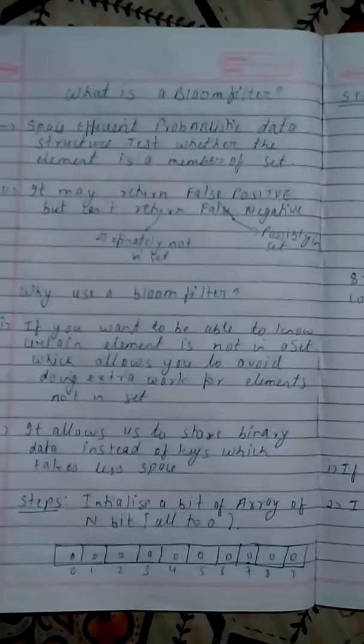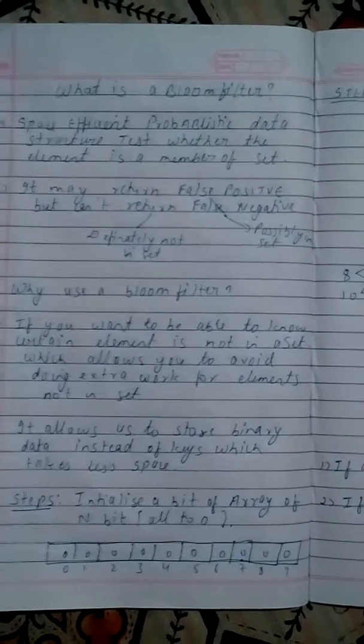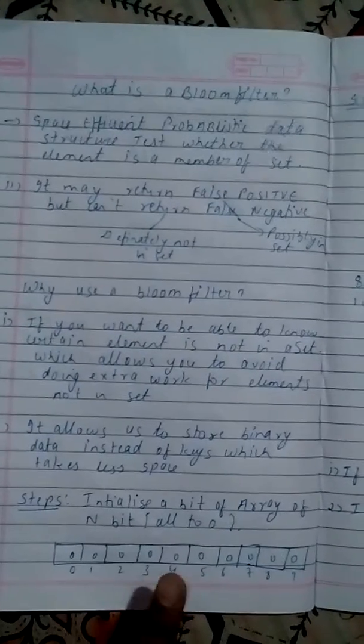Starting with the Bloom filter, the first step is we have to draw an n-bit array. You may take an array of 10 bits or 5 bits, whatever you want. First of all, you have to initialize the array to all bits to 0.